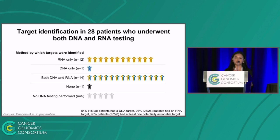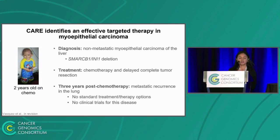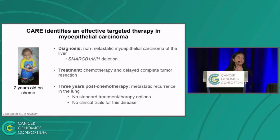I want to describe one patient from the study where we were able to identify an effective therapy from the RNA sequencing data, but not from the DNA mutation data. We had a 28-month-old boy who was diagnosed with myoepithelial carcinoma of the liver. This was non-metastatic. This cancer is ultra-rare, and there were no actionable mutations from tumor DNA profiling. The patient was treated with chemotherapy and the liver tumor was excised. However, the patient eventually developed metastatic disease to the lungs and therapy options were needed, so he was enrolled on our study.